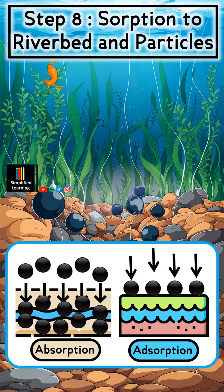The next step is absorption to the riverbed and particles. Pollutants can attach or adsorb to particles in the water or riverbed. This includes processes such as adsorption — attachment to surfaces — and absorption — penetration into material. Adsorption and absorption help remove pollutants from the water column, although they may remain in the sediments and could be remobilized under certain conditions.